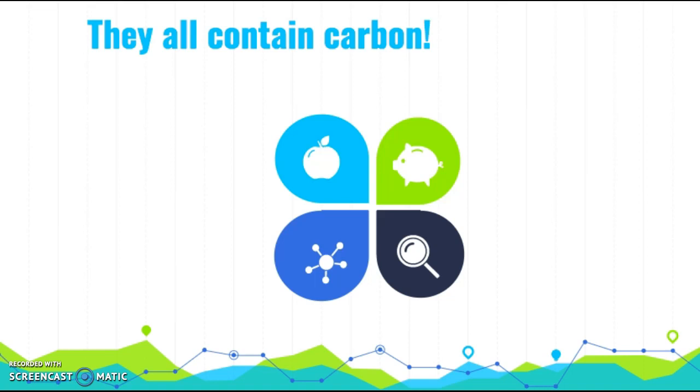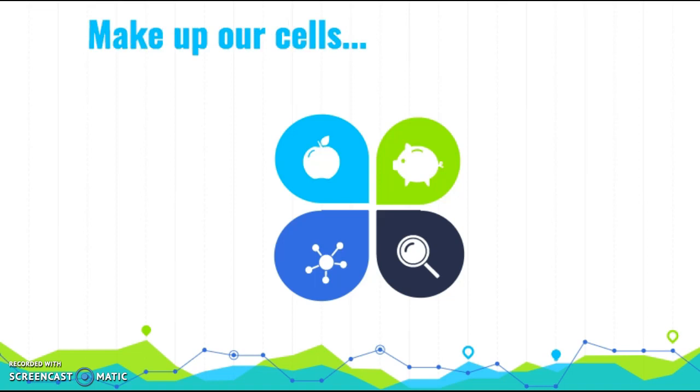Now, all four of these categories all contain carbon. So when we look at their molecular structure, we're going to see the letter C representing that carbon atom or carbon atoms within these molecules. Now, they all make up different parts of our cells.